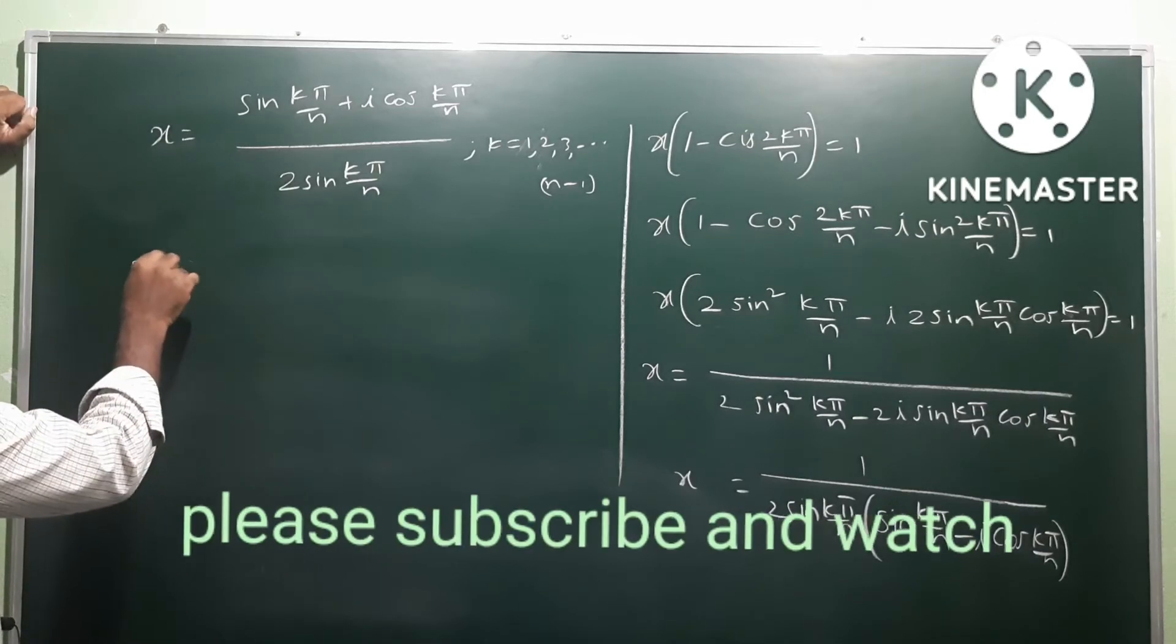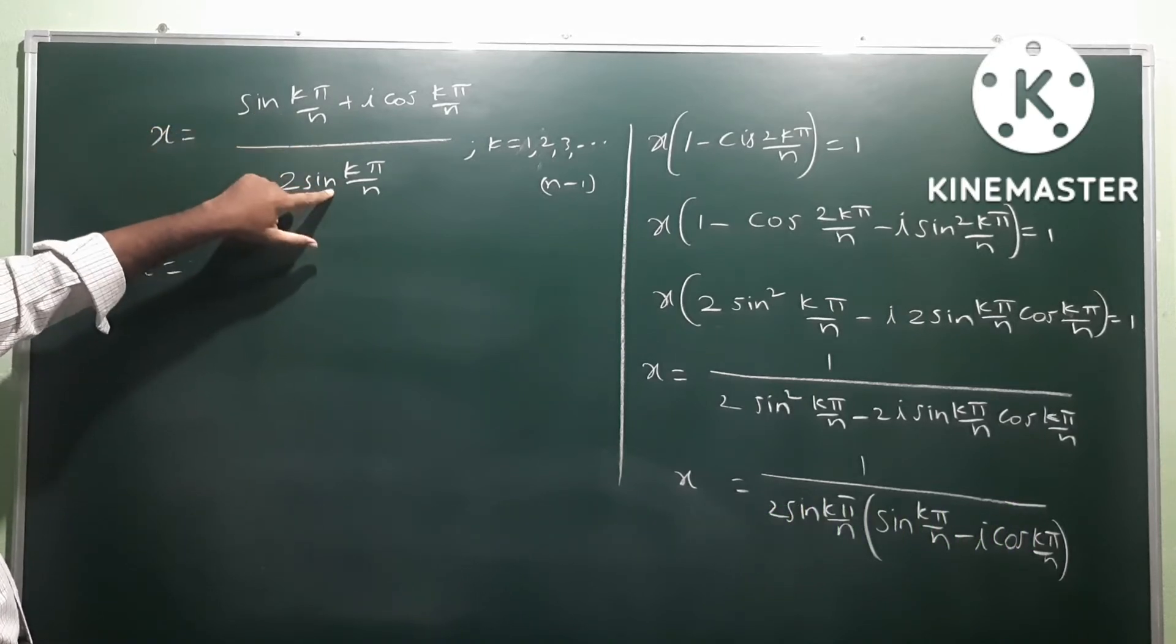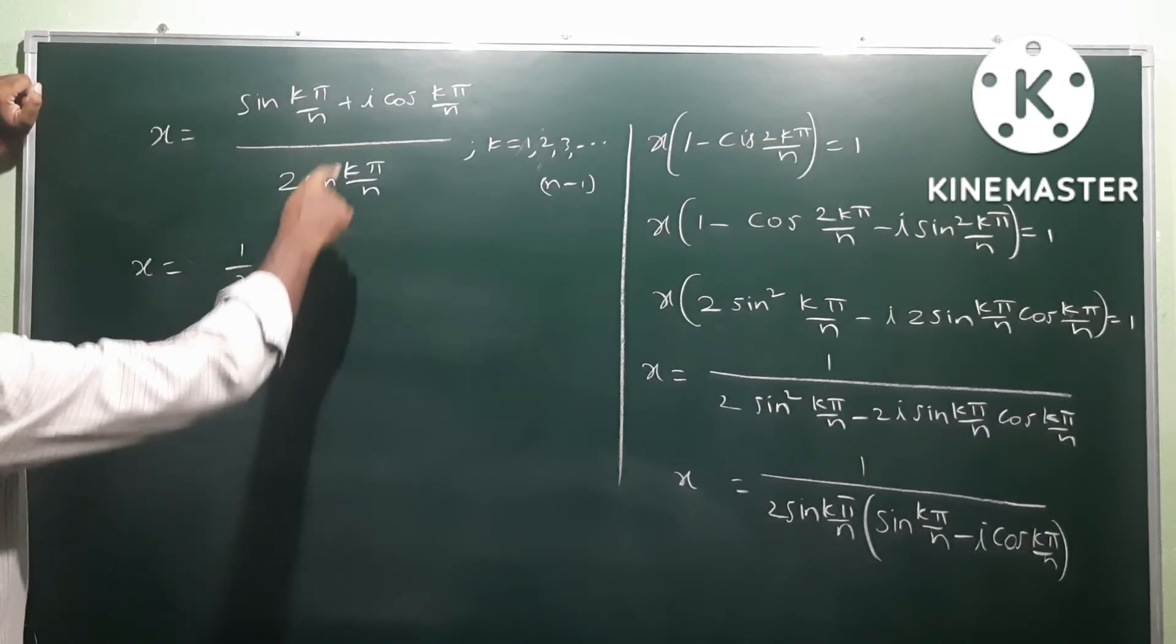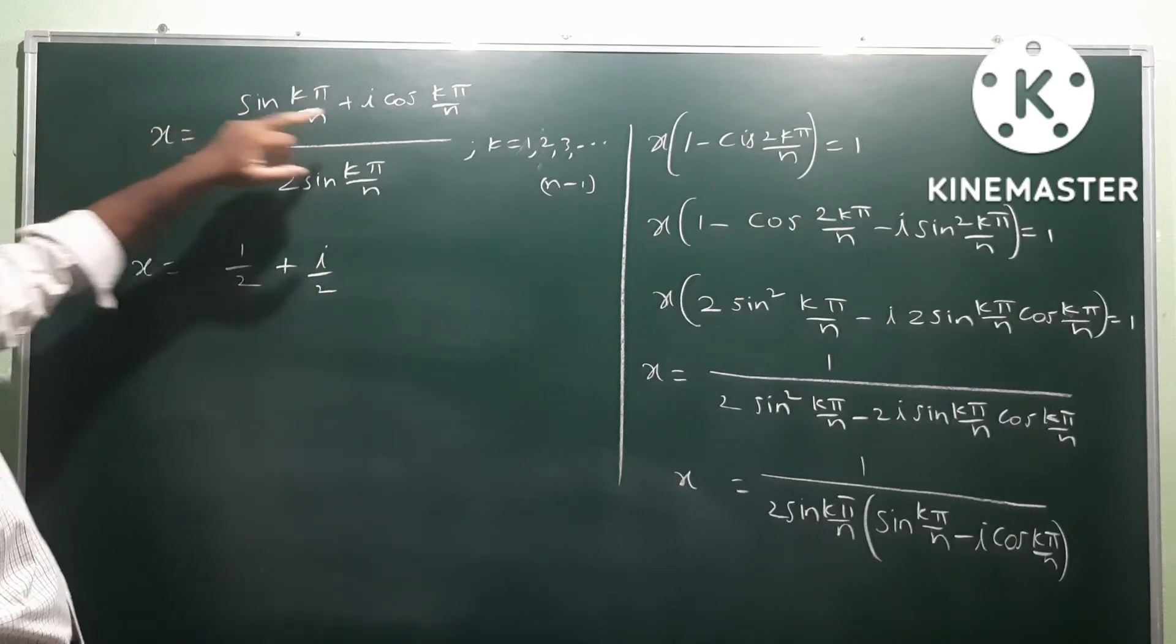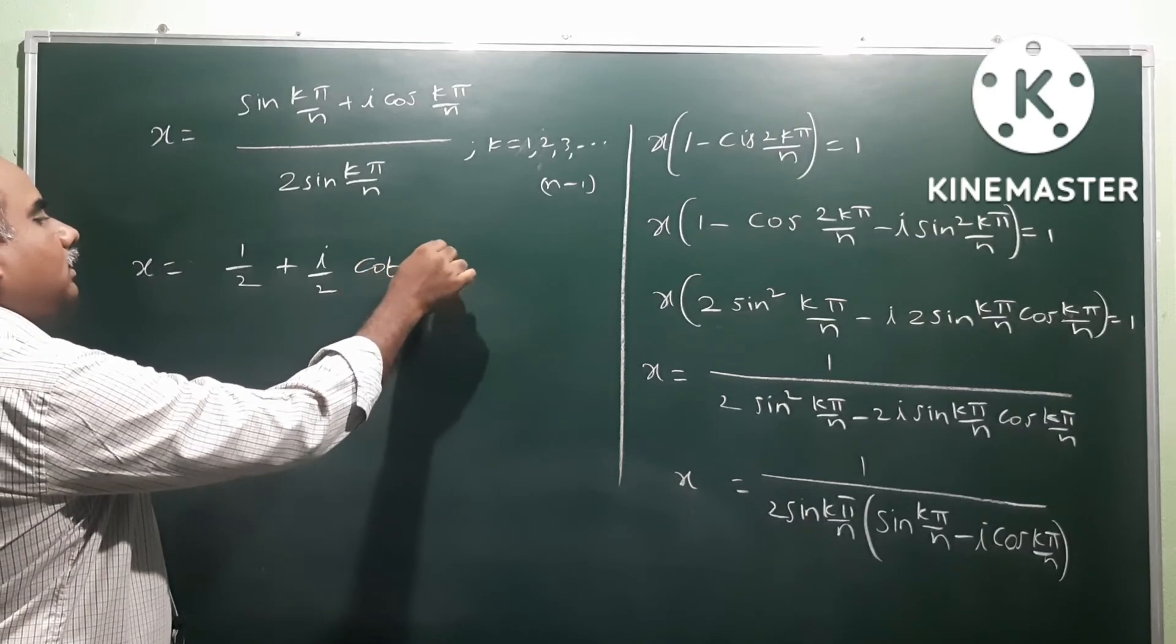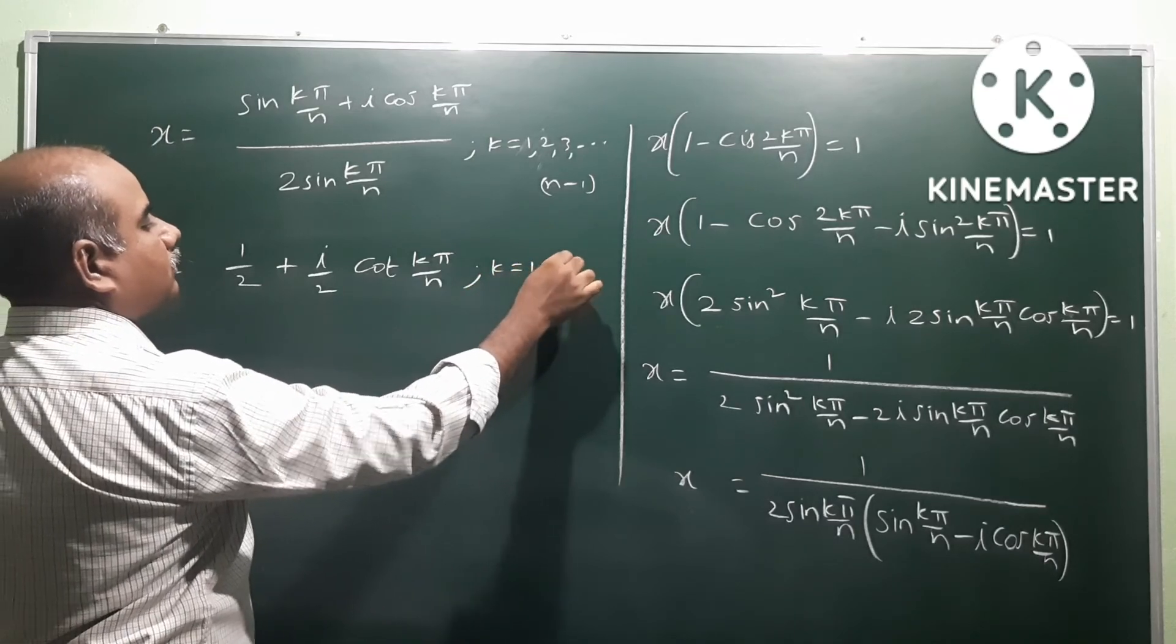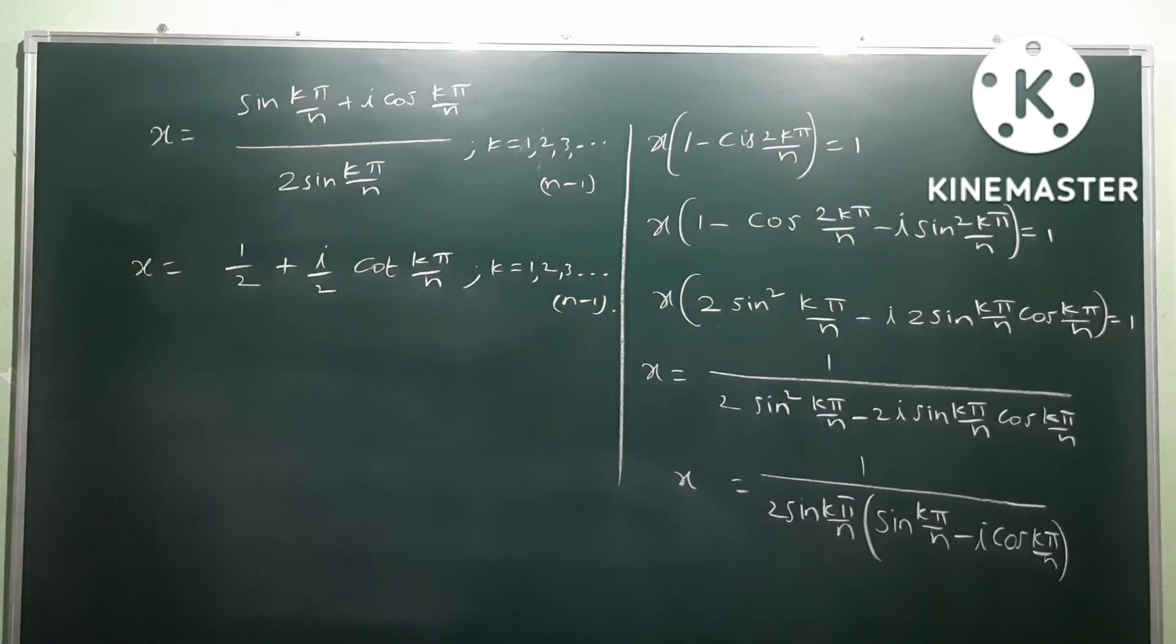Since we cannot take 0 because denominator becomes 0, therefore x equals... The fractions divide, same cancels. The numerator and denominator: 2 cancels to give (1/2 + i/2·cot(kπ/n)).